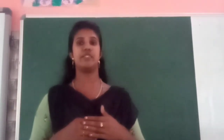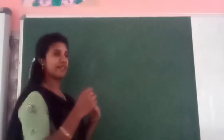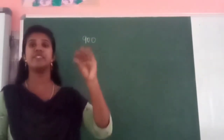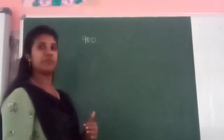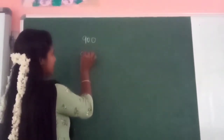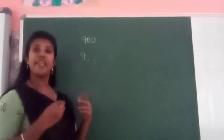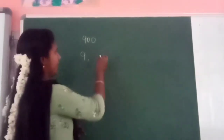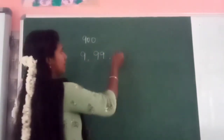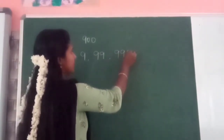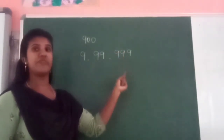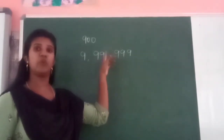What is the last value in hundreds? It is 900. So what is the highest three-digit number? The highest single-digit number is 9. The highest two-digit number is 99. And the same way, the highest three-digit number is 999. When we add one to this number, 9 plus 1 equals 10.